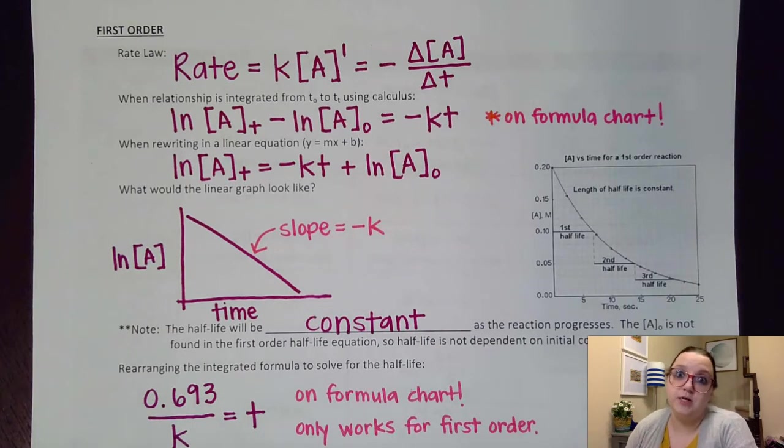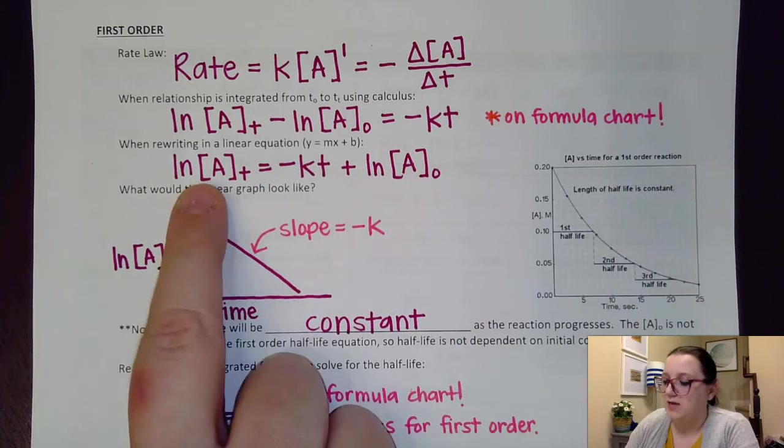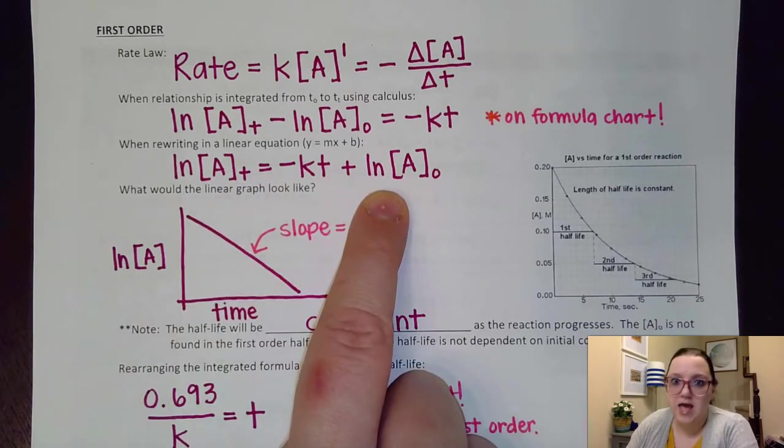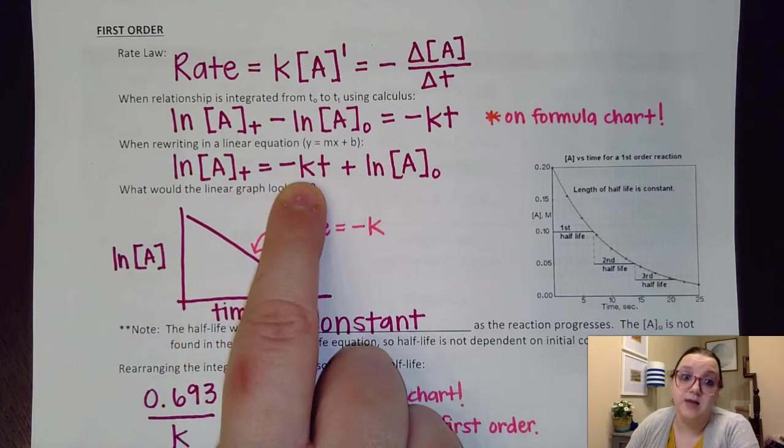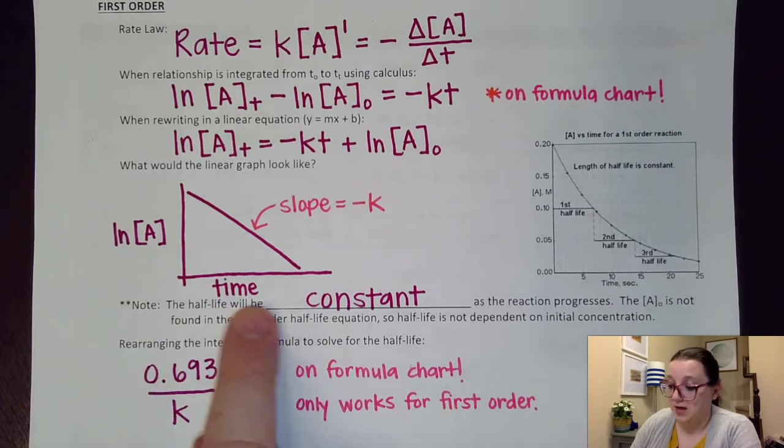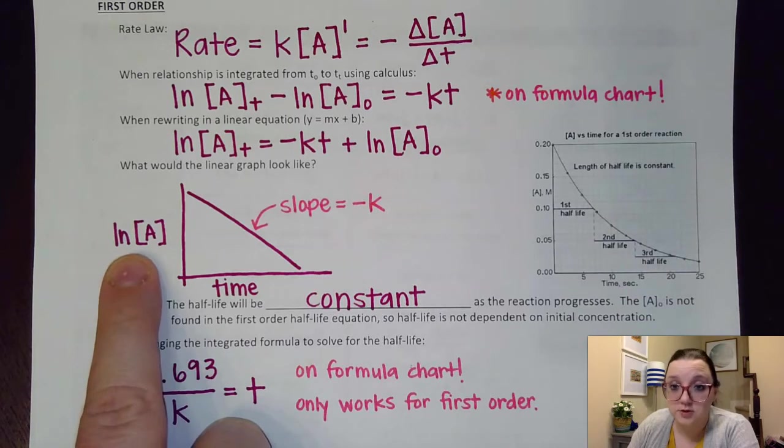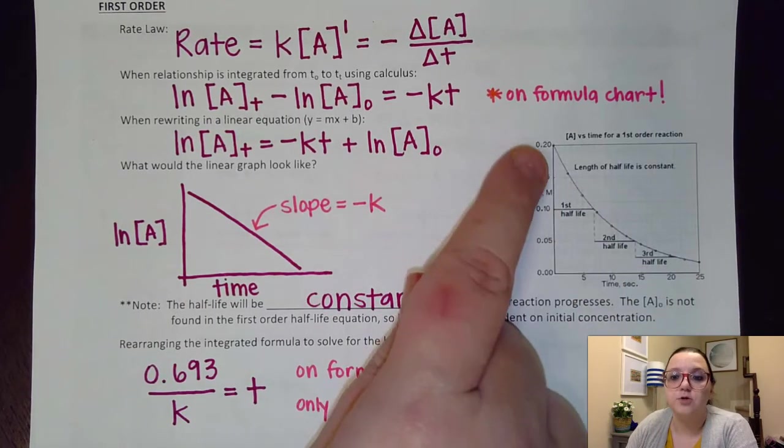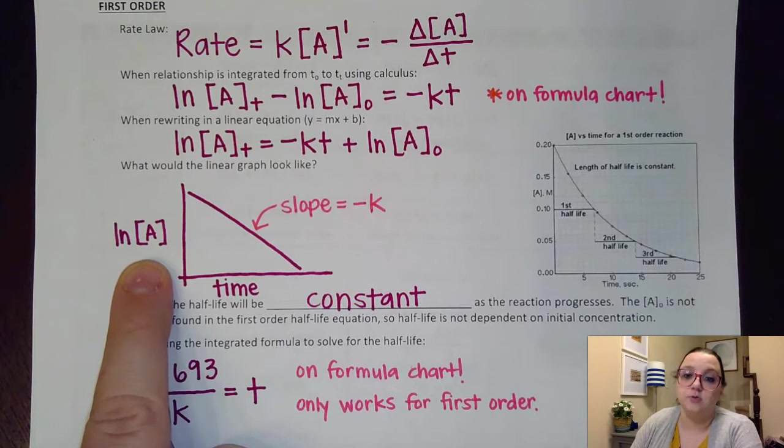So, then, if I rearrange that formula to put it into a linear format, a Y equals MX plus B, what I notice here for my Y and my B is a natural log, not just A. So, a little bit different than what we saw just a minute ago. We also see that that would give us a slope, again, of negative K. So, this time, our linear graph has ln of A in time with our negative slope here. If I was to graph just the regular change in concentration of this and not the natural log concentration, what I would get is those curved graphs that we're used to seeing. But, that's not a straight line. The way I pick out a first order is based on what graph gives me a straight line. And, that's going to be our natural log graph.